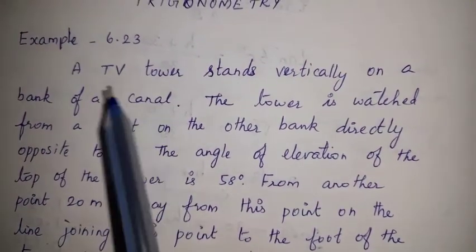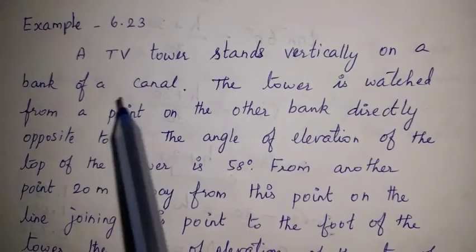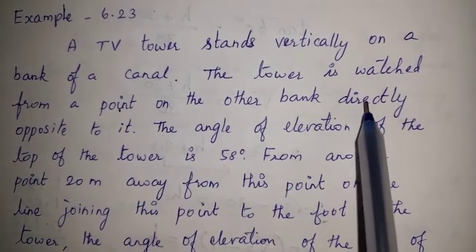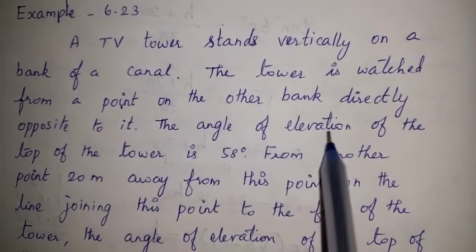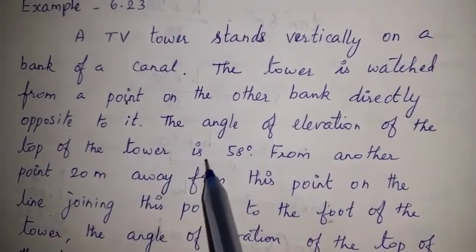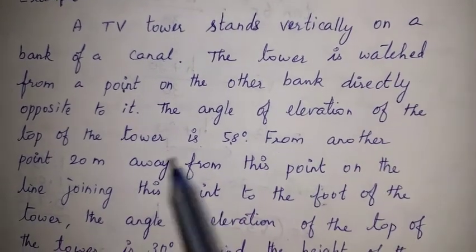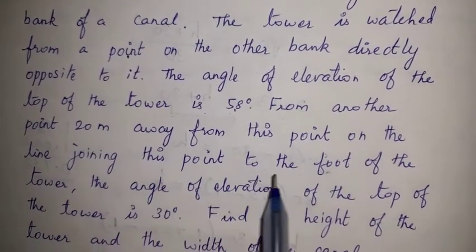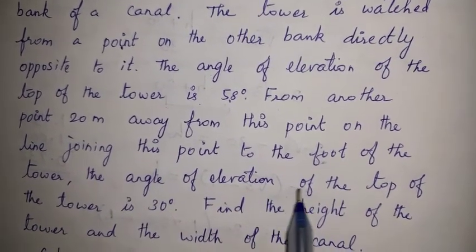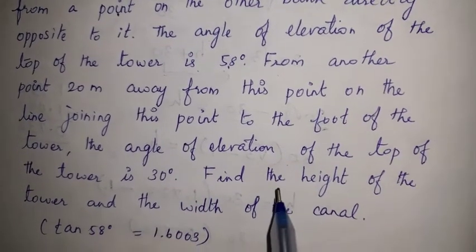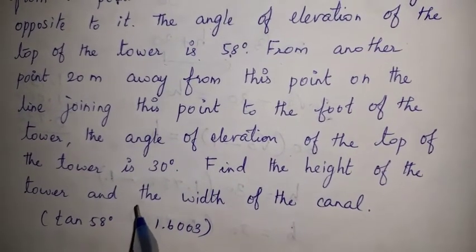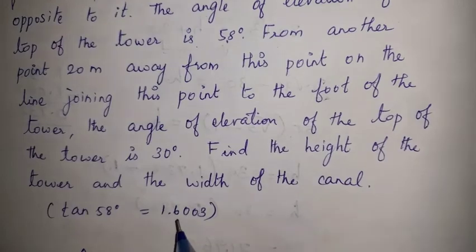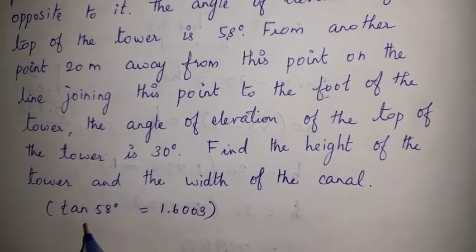A TV tower stands vertically on a bank of a canal. The tower is watched from a point on the other bank directly opposite to it. The angle of elevation of the top of the tower is 58 degrees. From another point 20 meters away from this point, on the line joining this point to the foot of the tower, the angle of elevation of the top of the tower is 30 degrees. Find the height of the tower and the width of the canal. Hint: tan 58 degrees is equal to 1.6003.